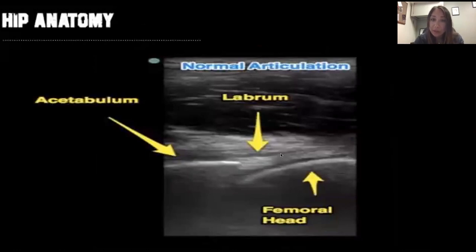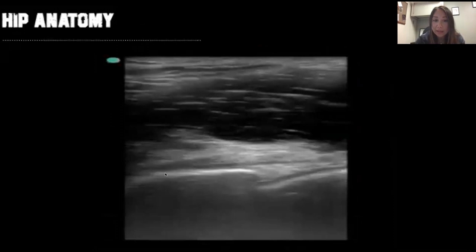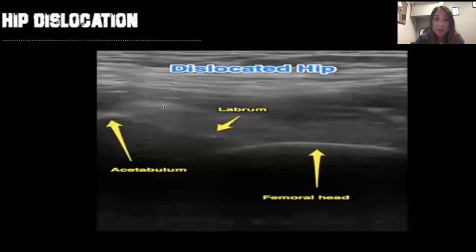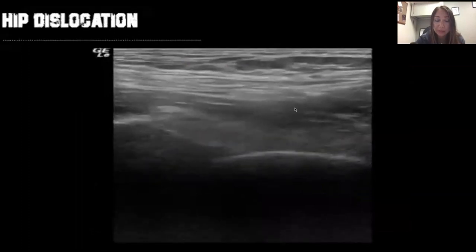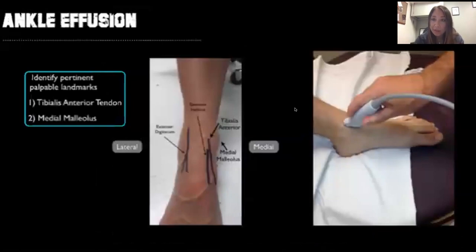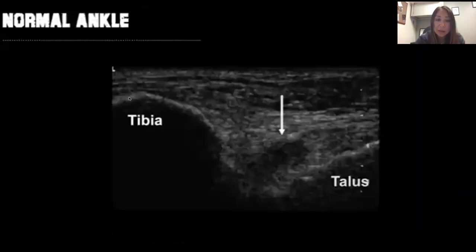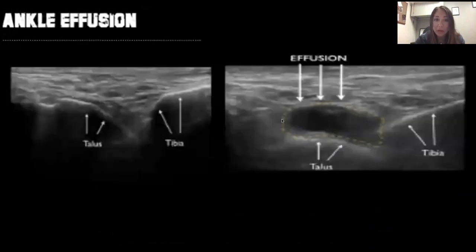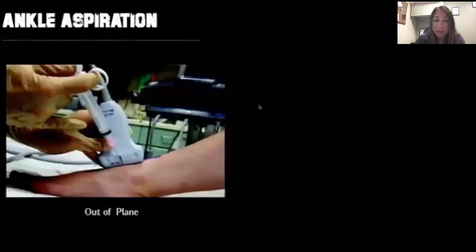We can use ultrasound to look for hip dislocations. Here's the acetabulum and femoral head — normal articulation where everything is in place. With a dislocated hip, there's a loss of normal alignment between the femoral head and acetabulum, confirming dislocation. Moving down the lower extremity, we can diagnose ankle effusions by identifying the tibialis anterior tendon and medial malleolus. Here's the tibia and talus — an effusion would appear as a hypoechoic area here, and we can aspirate it either out of plane or in plane.